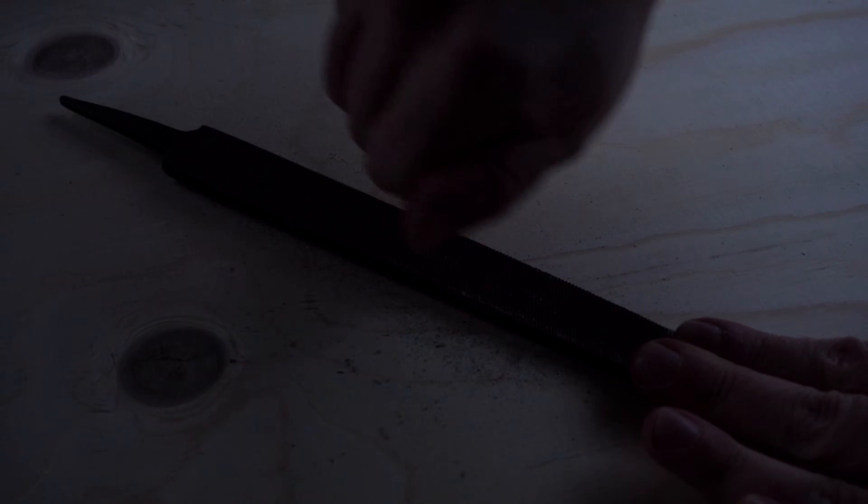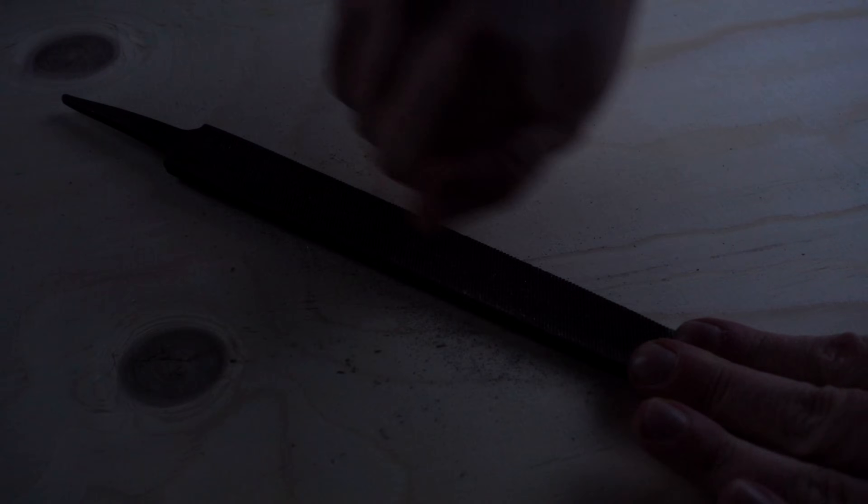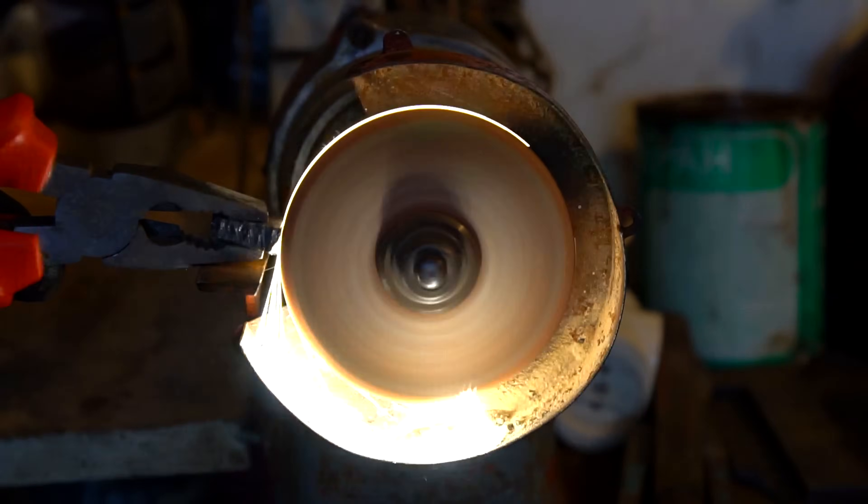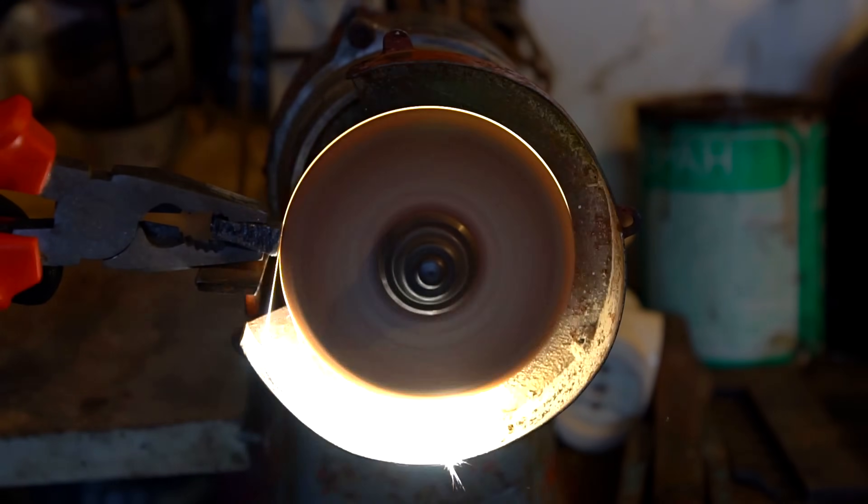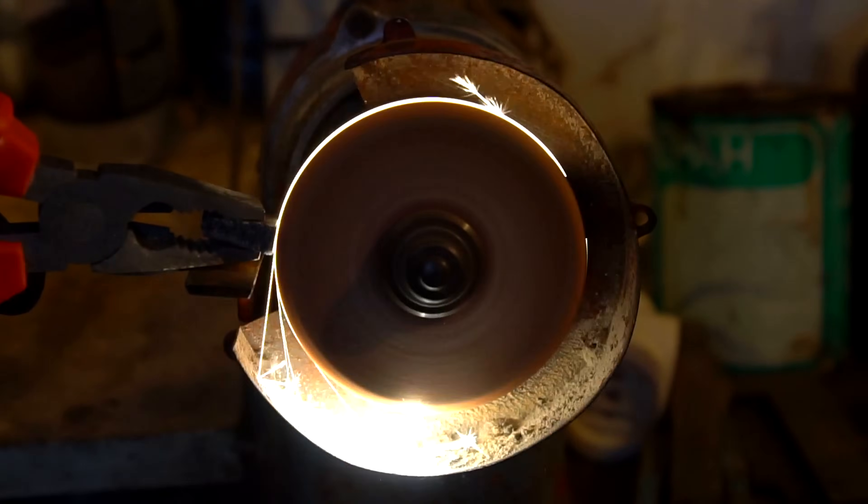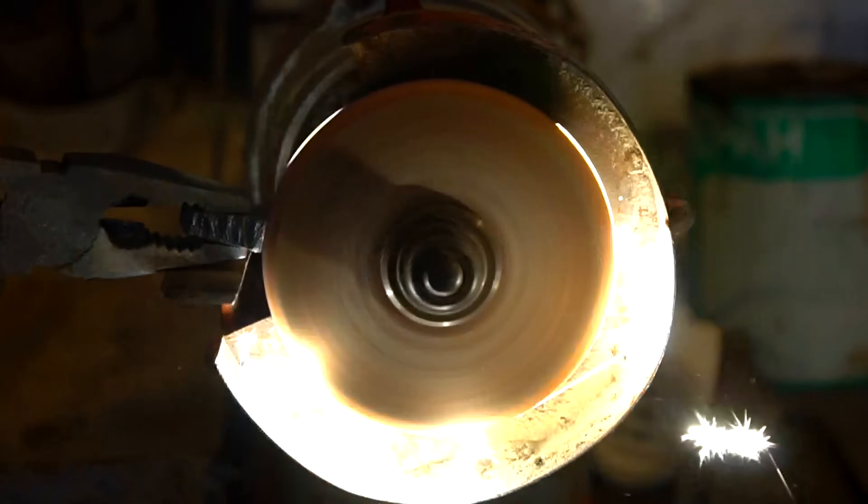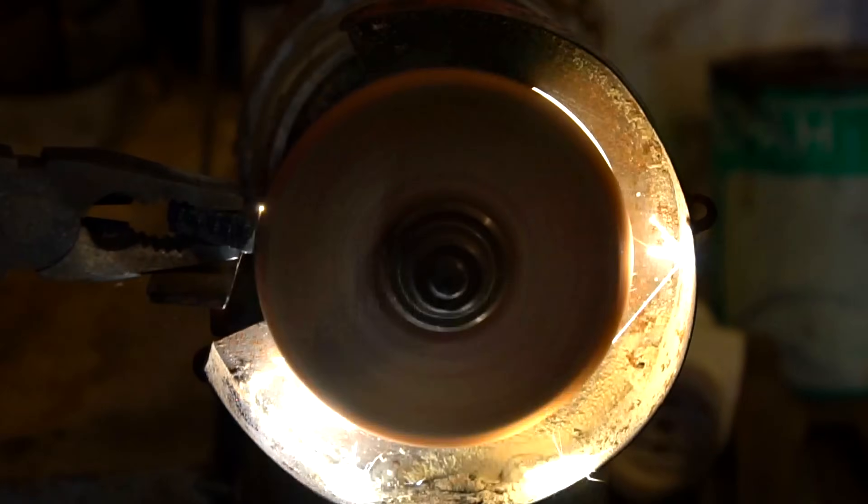Just like zirconium, hafnium produces bright sparks when rubbed on a file. However, they are seen even better when a piece of hafnium is ground against a grinding wheel. The small particles produced burn up in the air at a very high temperature, more than 2000 Celsius degrees to be precise, which produces very bright sparks.